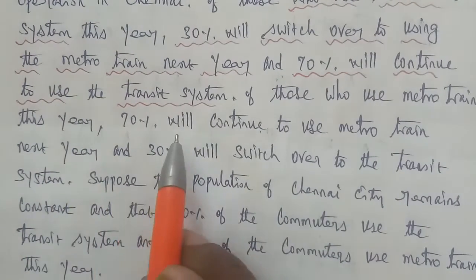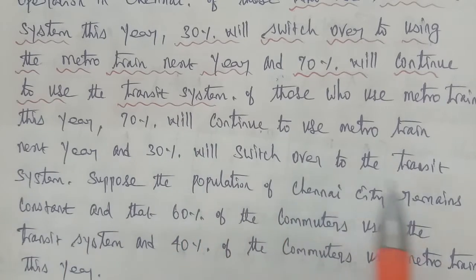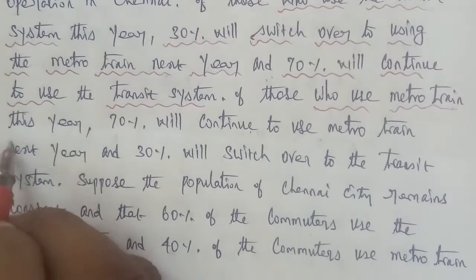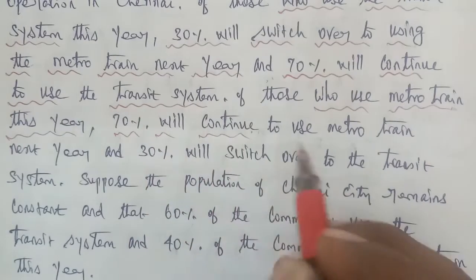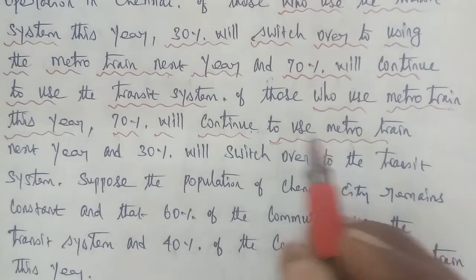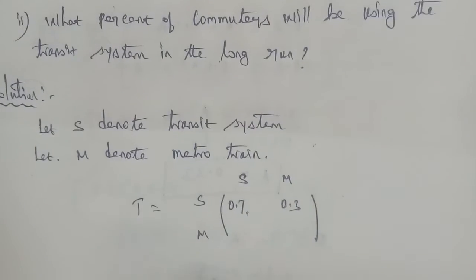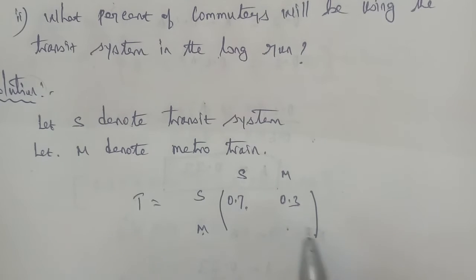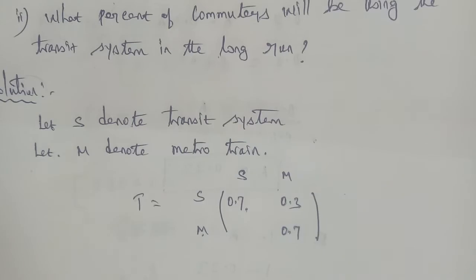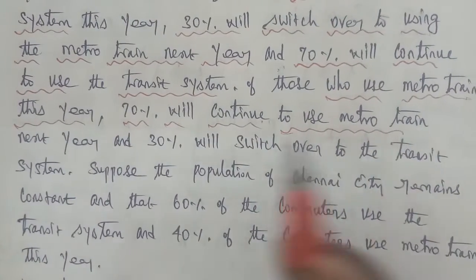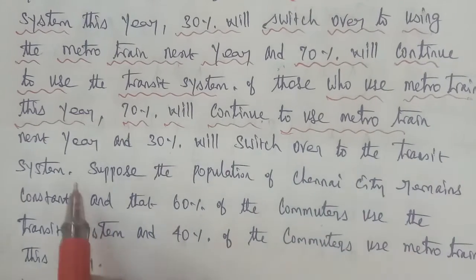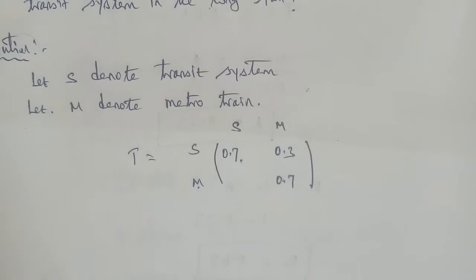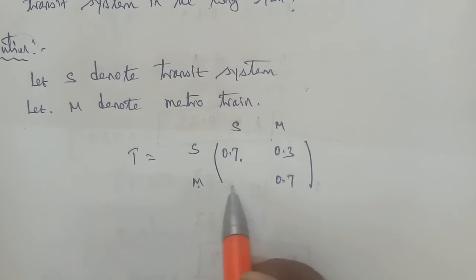Of those who used the metro train this year, 70% will continue to use the metro train next year — that is 0.7. And 30% will switch over to the transit system — that is 0.3.